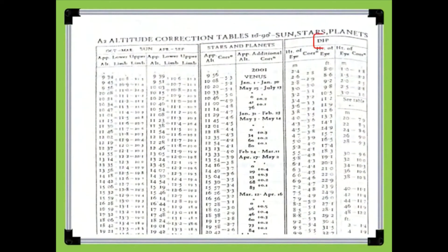Using the altitude correction table of the sun, stars and planets from the nautical almanac, locate the dip column. Under the dip column, locate the height of eye correction column.